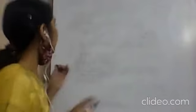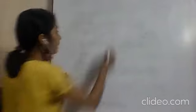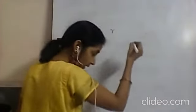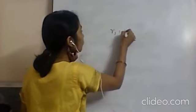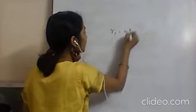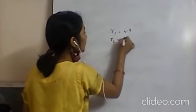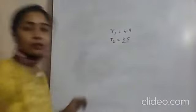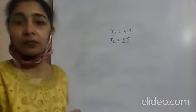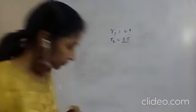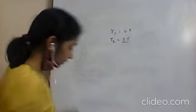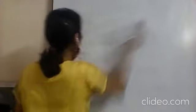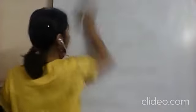R1 equals 4.9 meters and R2 equals 3.5 meters. Just substitute these values and calculate the answer.